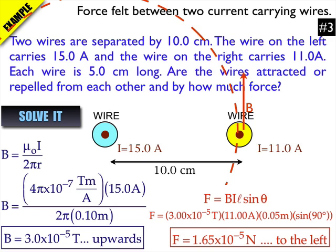And of course sin 90, they're perpendicular to each other. And that gives me the force, the magnitude of the force, to be 1.65 × 10⁻⁵ Newtons. And it's pulling it towards the left.